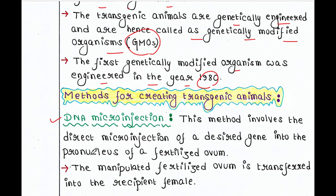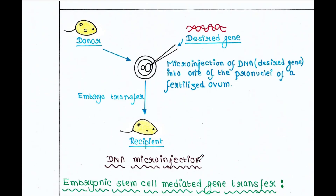This method involves the direct micro injection of a desired gene into the pronucleus of a fertilized ovum. So this is the donor mouse — we can isolate its fertilized ovum. In the fertilized ovum there are two pronuclei, one from the mother and another from the father. At this stage the two pronuclei remain separate in the egg cytoplasm; they are not yet fused.